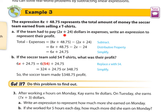We have to subtract the initial investment from the total so we can have the profit. So total minus expenses. And then we work with like terms: 8x minus 2x equals 6x, and 48.75 minus 24, because it's take away 24, equals 24.75.